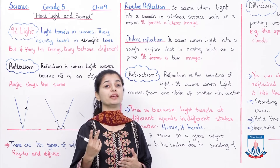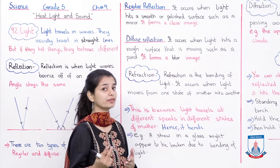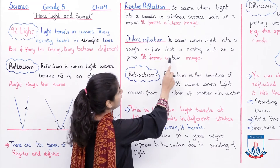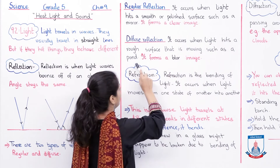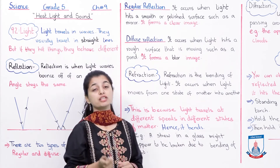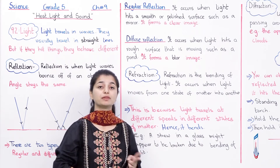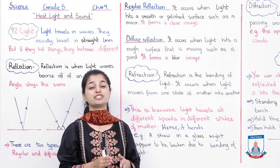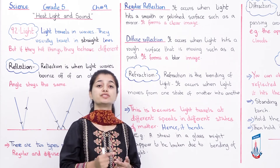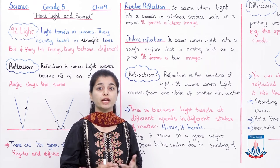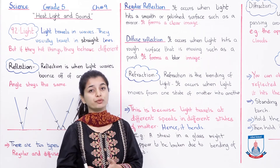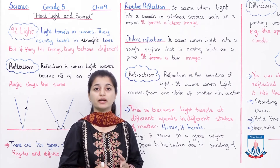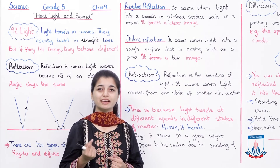What is the other type? Diffuse reflection. It occurs when light hits a rough surface that is moving, such as a pond. It forms a blurred image. The surface is rough and constantly moving, so the reflection is blurred — unclear and uneven.